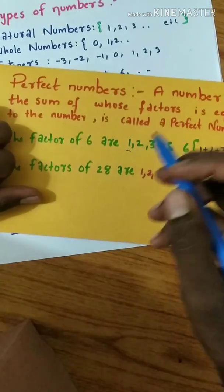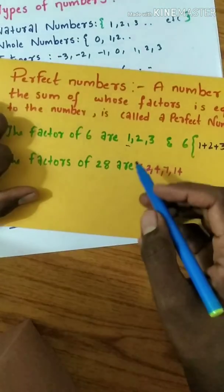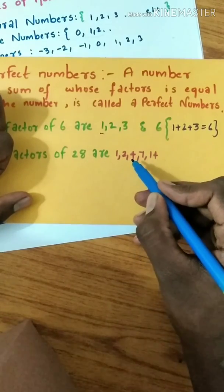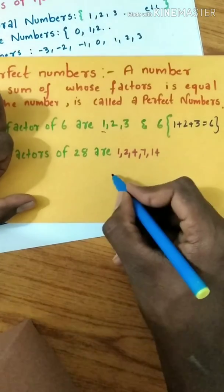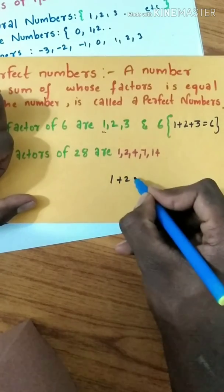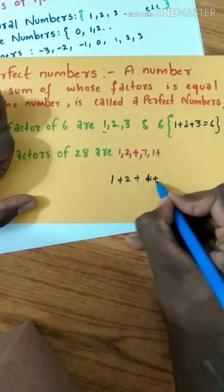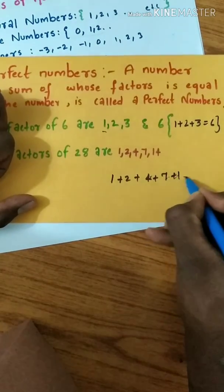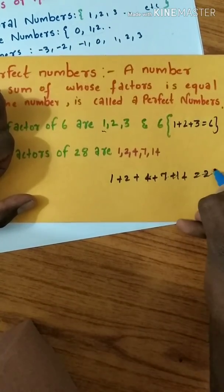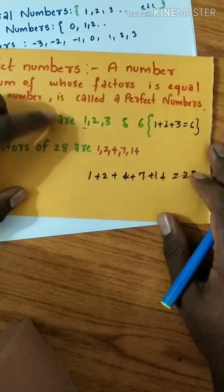If we take the factors of 28, they are 1, 2, 4, 7, and 14. If you add 1 + 2 + 4 + 7 + 14, you get 28. This is a perfect number.